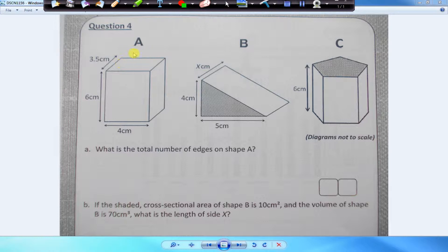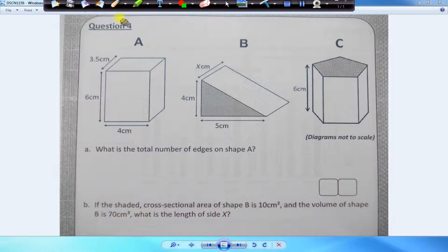Question number four, folks — we are now back live again. What is the total number of edges on shape A? Let's use a bit of highlighter. So we have how many edges here: one, two, three, and four — and then we'll have how many in the bottom.